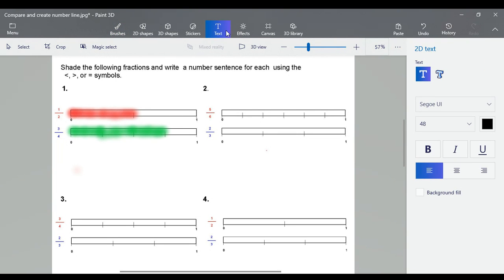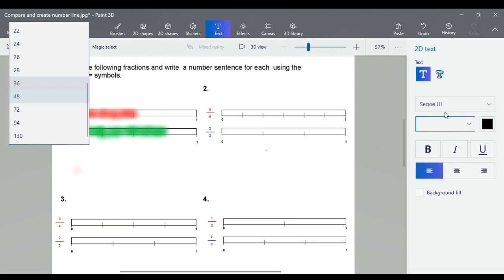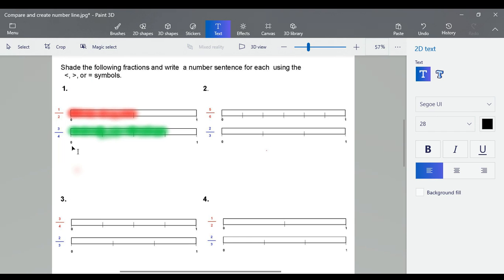Put in the 2D text, I'll make it about 28. And there, so you create your own number sentence. So you can have one half, and remember you use either the greater than or less than, so we can go say less than three quarters. So there's my number sentence. If it was the other way around, you would go three quarters greater than.